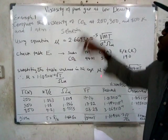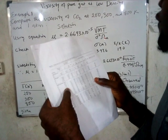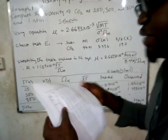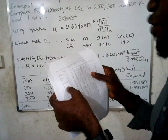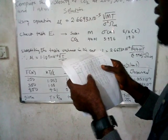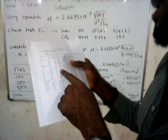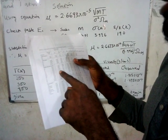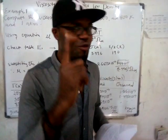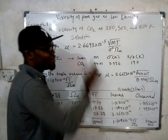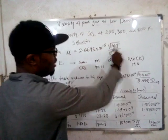Look for the substance in question, which is CO2. From Table E1 you can see that CO2 has a molecular weight of 44.01. The Lennard-Jones parameter σ is 3.996, and the energy parameter ε/k is 190. So all these values — 44.01, 3.996, and 190 — are already in Table E1. Keep Table E1 handy; we are going to use these values.